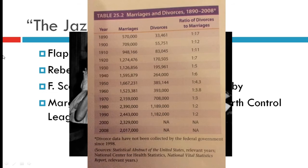One more thing: divorce was on the rise, and birth control was sought because of a real need for smaller families, especially in cities and tenements. In agricultural labor it helped to have more hands, but for wage earners in cities, more children meant more mouths to feed. There were significant changes to the family as well.